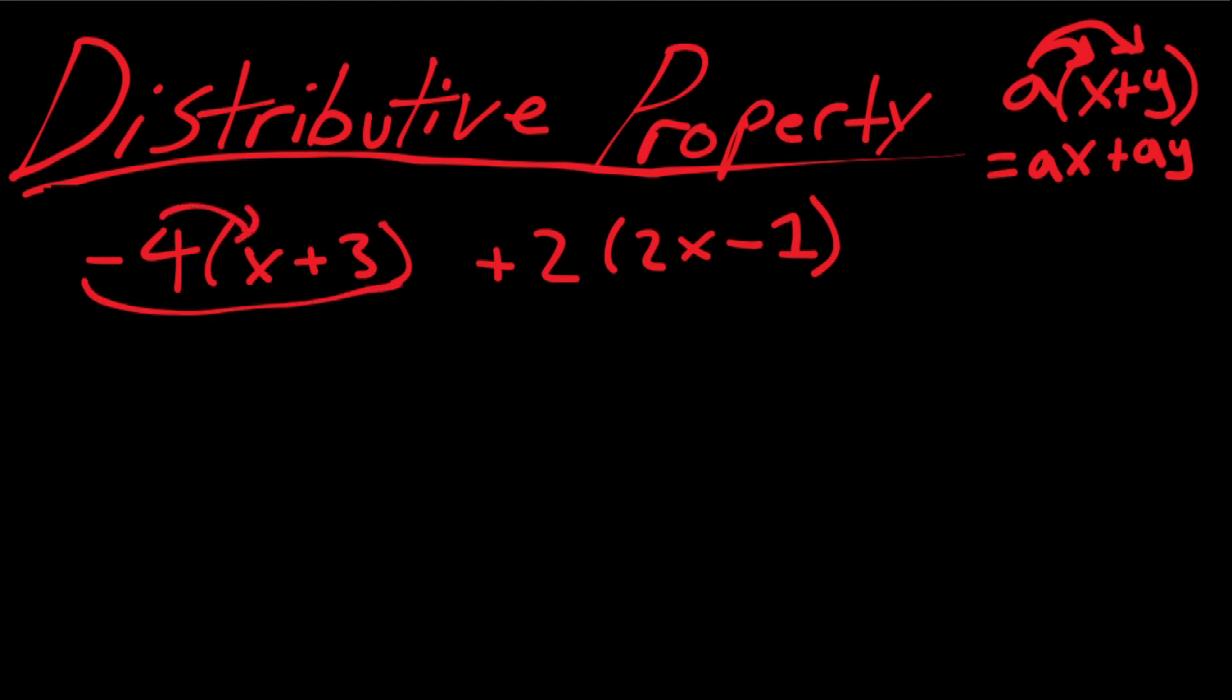So now we have negative 4 times x plus 3 plus 2 times 2x minus 1. Let's work with this first part first. Let's do negative 4 into the x, that gives us negative 4x. And let's do the negative 4 to the 3, that gives us negative 12. Negative times positive is negative. And then I'm left with this here. We have to do 2 times 2x, which is 4x, and then 2 times negative 1, that leaves us with a negative 2.